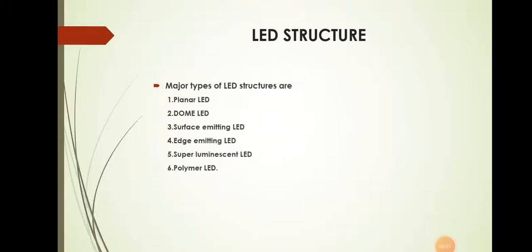This session will discuss the LED structure. The major types of LED structures are planar LED, dome LED, surface emitting LED, edge emitting LED, super luminous LED, and polymer LED. In this session we will discuss the first three LED structures: planar LED, dome LED, and surface emitting LED.